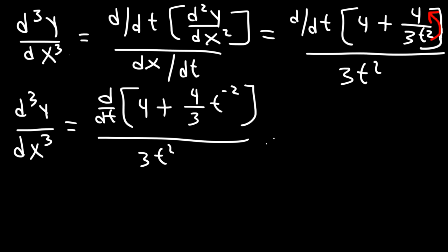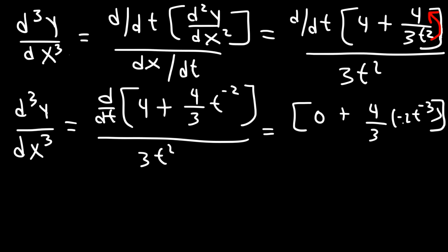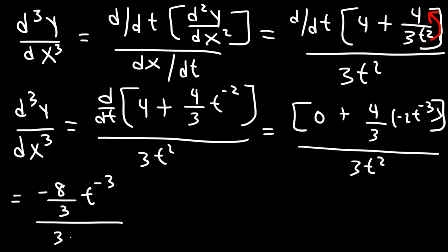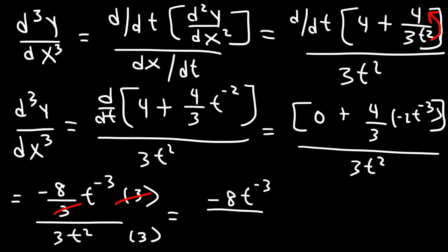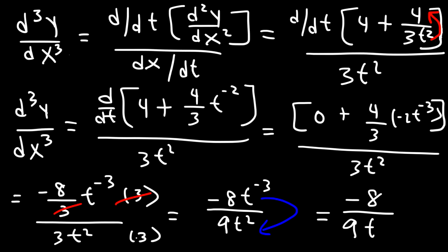The derivative of 4 is 0. The derivative of t to the negative 2 is negative 2t to the minus 3, based on the power rule. So we have 4 times negative 2, which is negative 8 over 3 times t to the negative 3, divided by 3t squared. Multiplying top and bottom by 3 gives negative 8t to the minus 3 divided by 9t squared. Moving t to the negative 3 back to the bottom, the final answer is negative 8 over 9t to the fifth power. That's the third derivative of the parametric function.